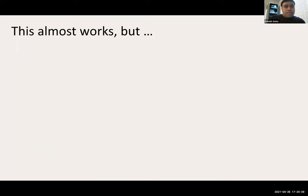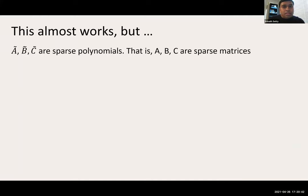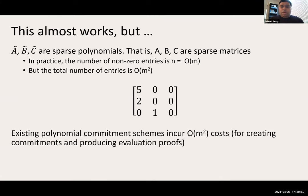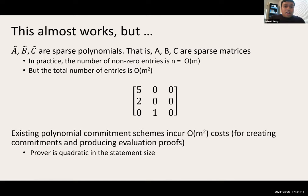This almost works, except that the three polynomials Ã, B̃, C̃ are sparse polynomials — A, B, C are sparse matrices. In practice, the number of nonzero entries is linear in the number of rows, but the total number of entries is quadratic. If we apply an existing polynomial commitment scheme, the prover would incur quadratic costs both for creating commitments to these sparse polynomials and for producing evaluation proofs.